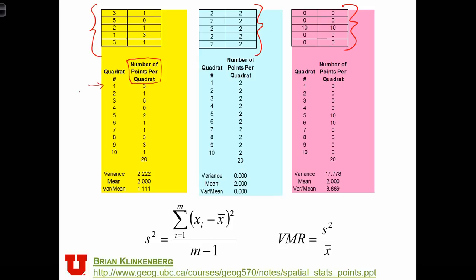And the variable of interest is the number of points per quadrat. So the first quadrat over here has three points in it. The second quadrat has one point. And the quadrats are numbered like this: 1, 2, 3, 4, 5, 6, 7, 8, and that's 9.